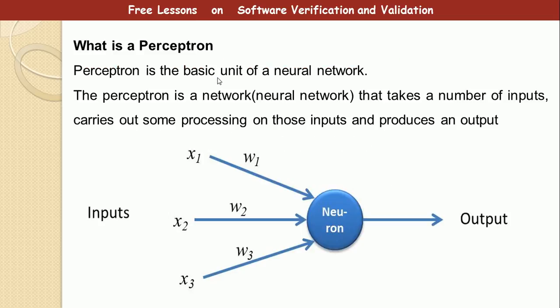What is the perceptron? The perceptron is actually the basic unit of a neural network. If you've heard about neural networks, know that the perceptron is the simplest neural network. It's a network that takes a number of inputs, processes them and gives an output — a neural network with just one neuron. A network is a connection of several nodes and edges, but in the case of a perceptron, we have just one single node, and that is a neuron.